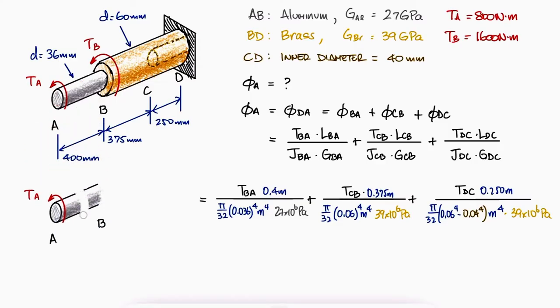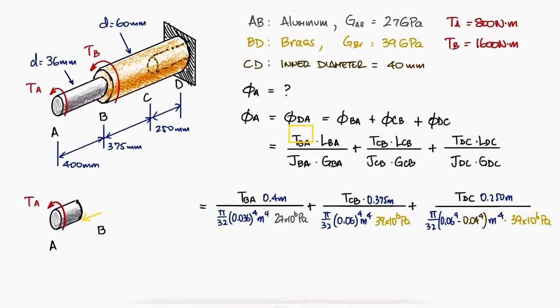The internal torque TBA from B to A will be the same as the negative of TAB from A to B, which means that the internal torque in the first term is just TA.